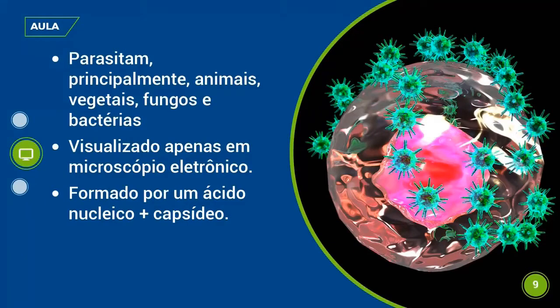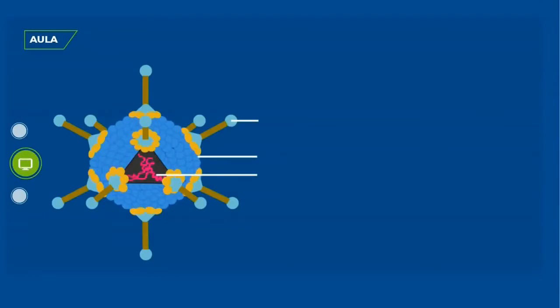Nessa imagem temos uma célula de um ser vivo sendo invadida por vários vírus. É importante lembrar que o vírus é bem menor que a bactéria, por isso é visualizado apenas por microscópio eletrônico. Eles são formados basicamente por ácido nucleico — que é o material genético, podendo ser tanto DNA quanto RNA — e capsídeo.